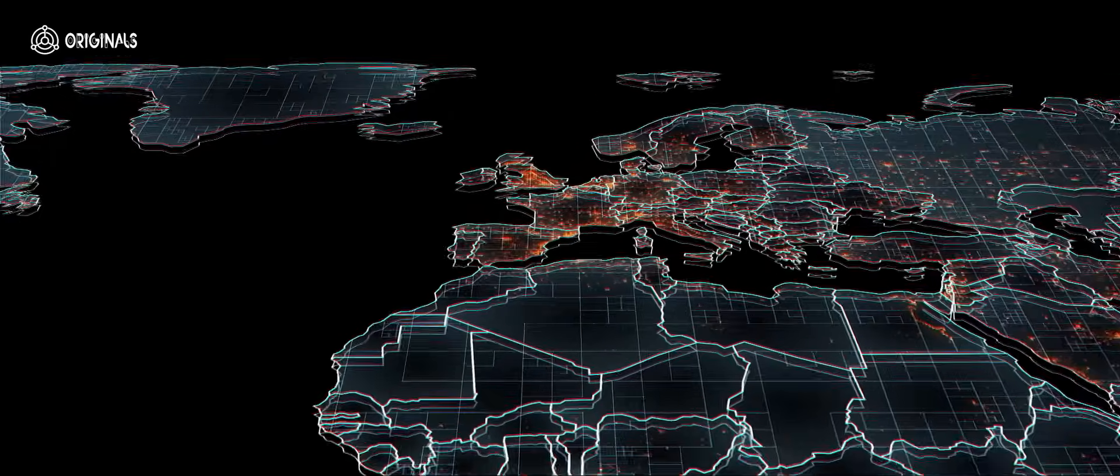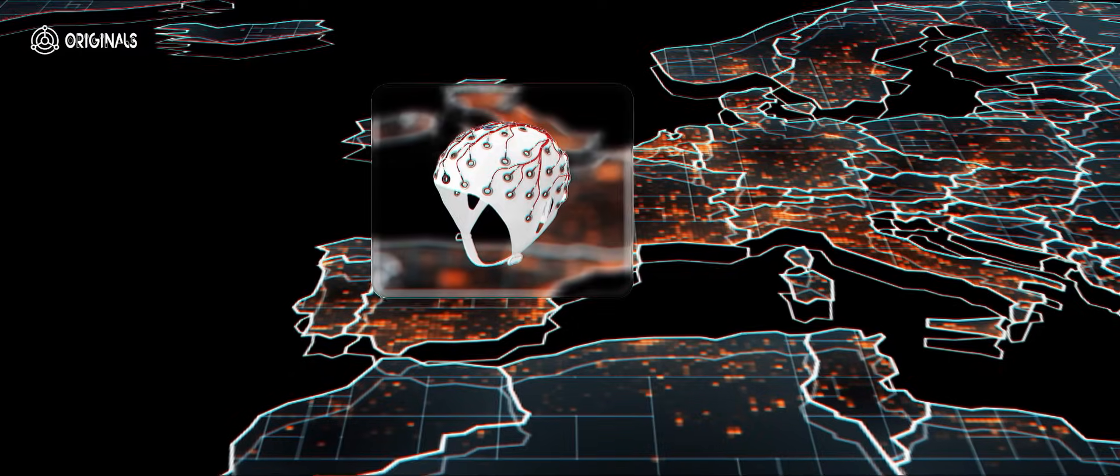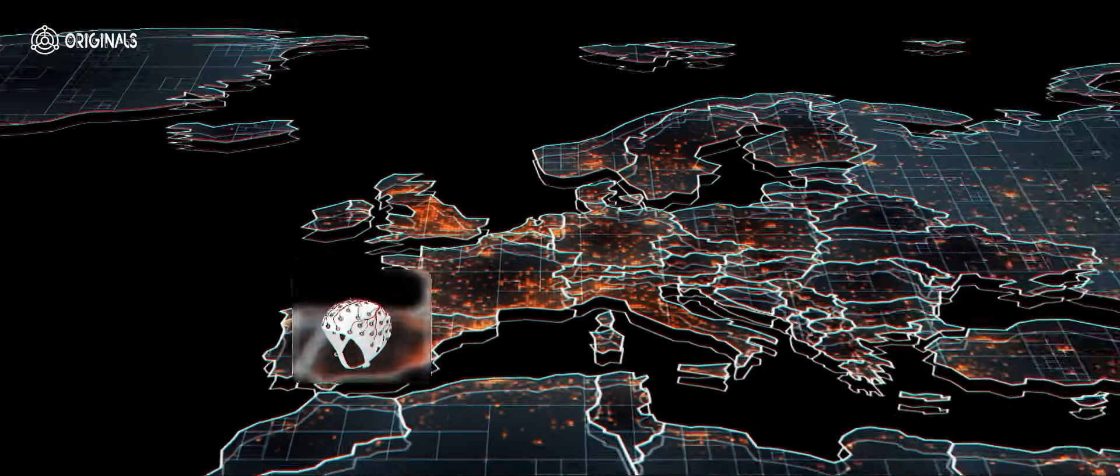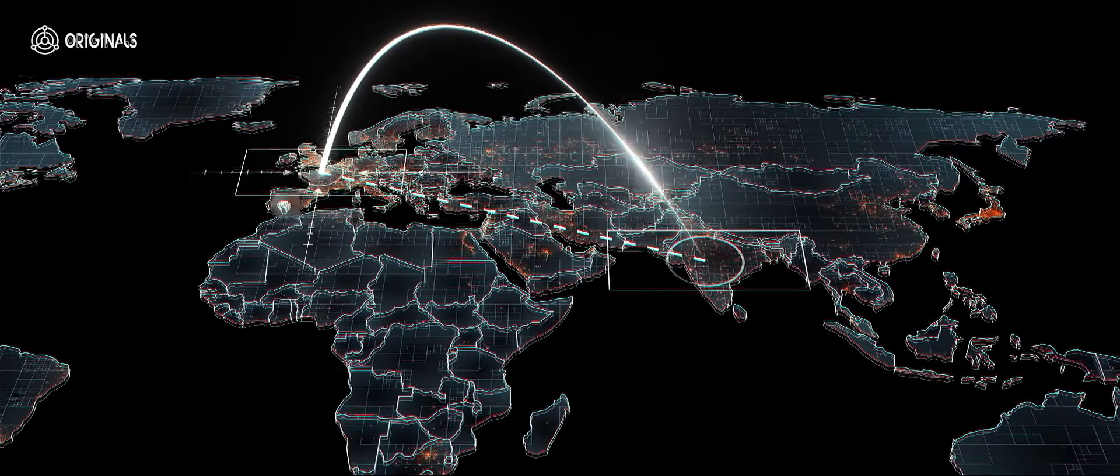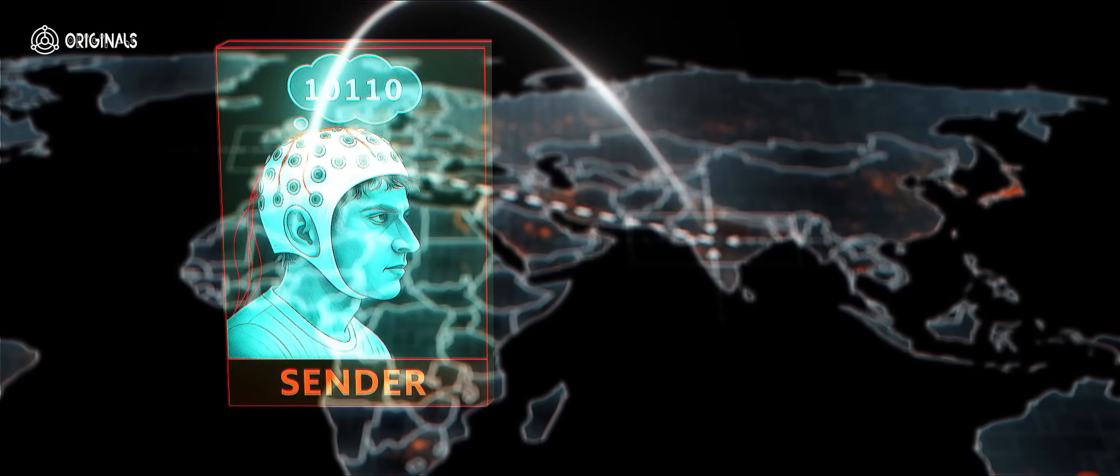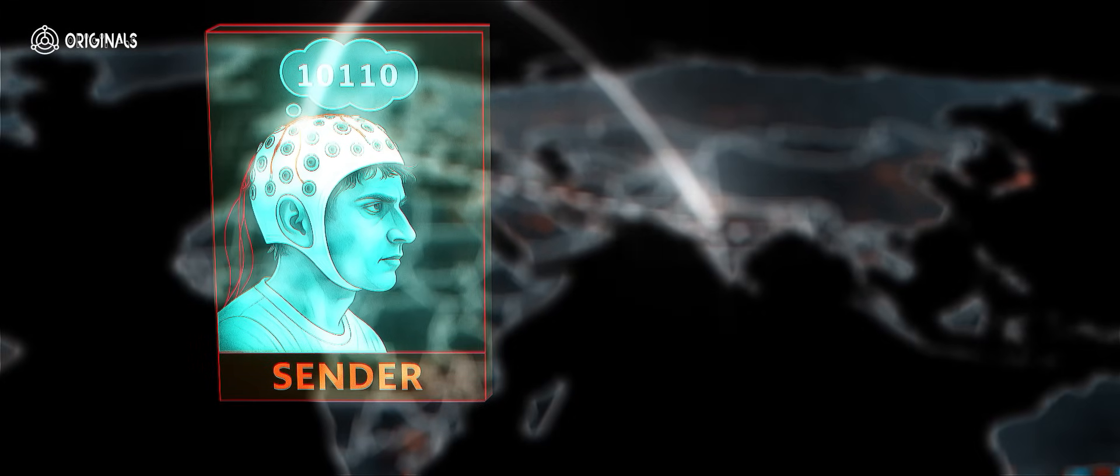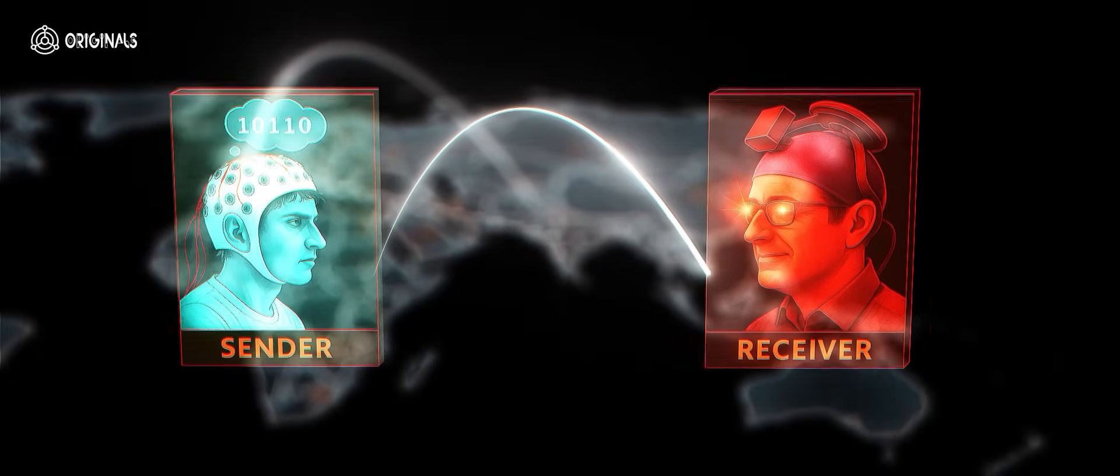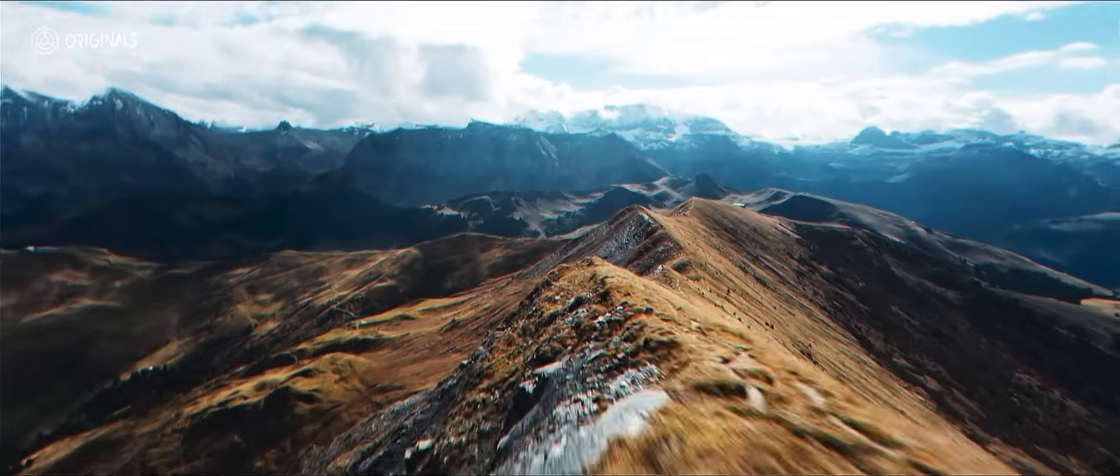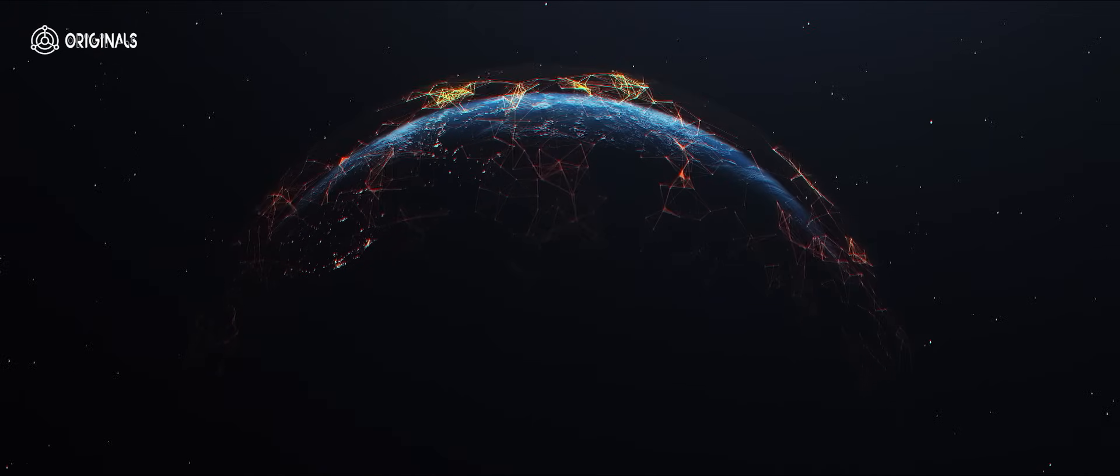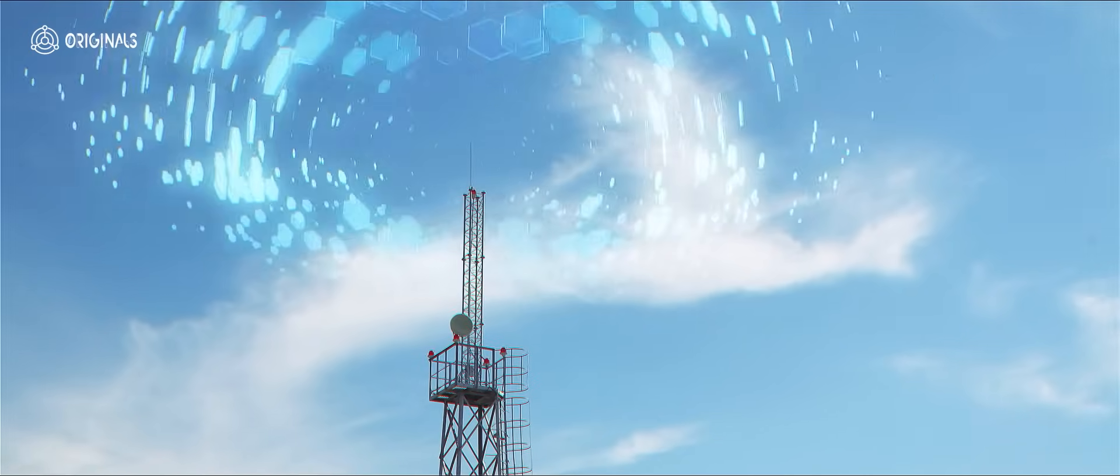In 2014, researchers in Spain and France used EEG and TMS to send the words Hola and Ciao from a person in India to a person in France, a distance of 5,000 miles. The sender merely thought of the word in binary code via a mental task. And the receiver, wearing a TMS apparatus, perceived flashes of light that encoded the message. This showed that geography is no barrier. As long as brains are connected by networks of computers, the internet, they can potentially exchange signals.